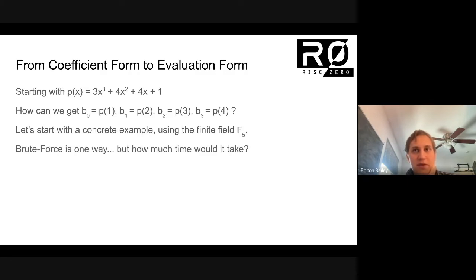So, one way we could do this, as I was alluding to, was brute force. We can evaluate p(1) by just multiplying things out. We have 1³, 1², 1, all of those are equal to 1. And so, if we add all these up, we get 12, which is equal to 2 mod 5. And so, that would tell us b₀ directly.